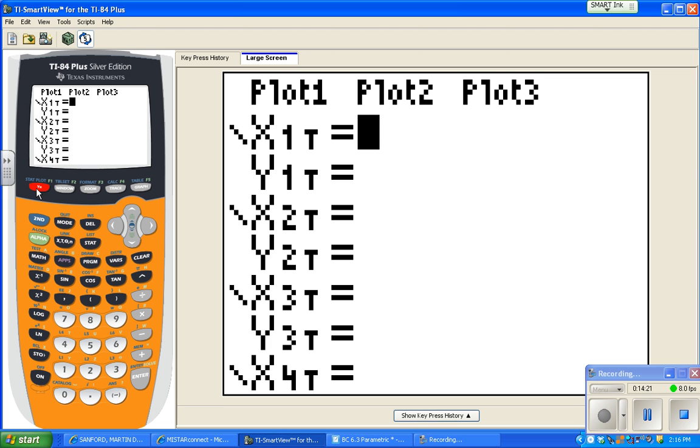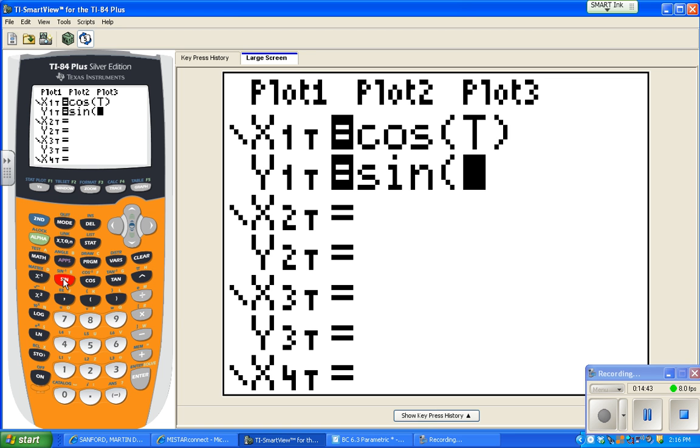If you recall, what we had was x was cosine. And notice when I push the x button, it's now a t. So that x, t, theta, n button switches when you're in different modes. The y equals, then, now notice the equal signs haven't highlighted yet, because we haven't done anything in the other one. Sine of t. So these are the function that we worked with just a minute ago.